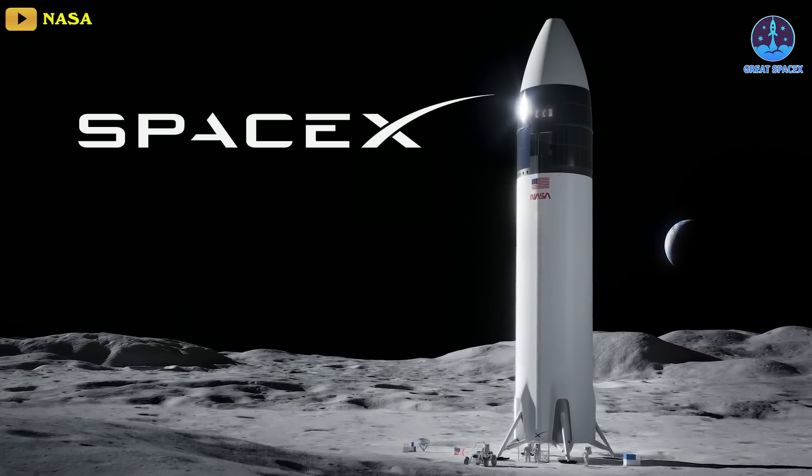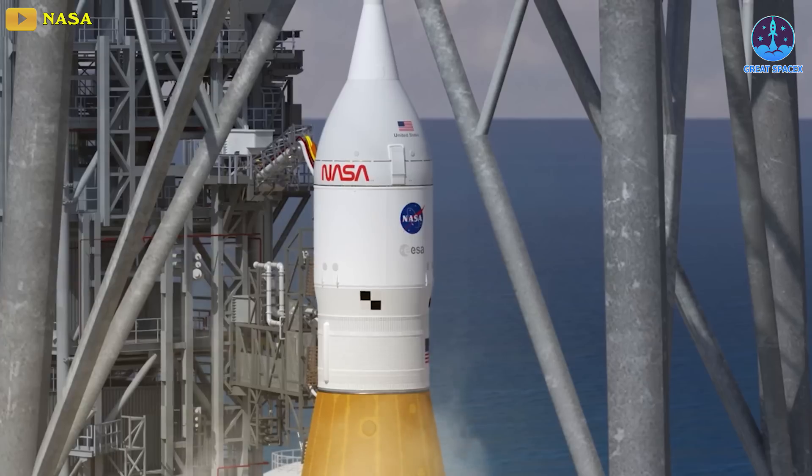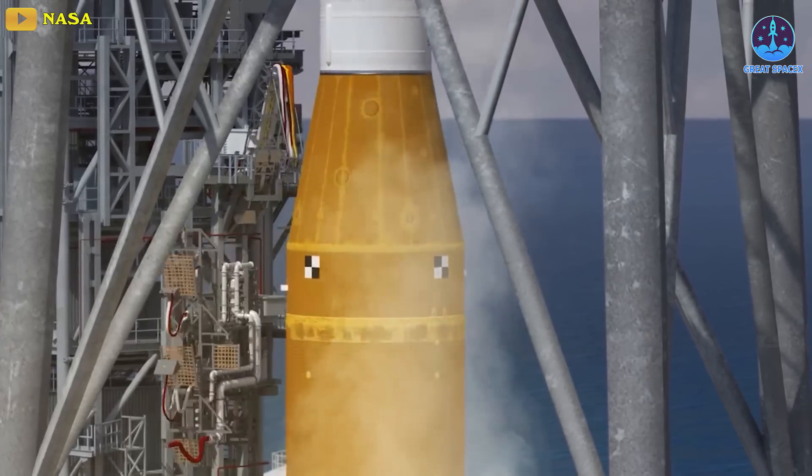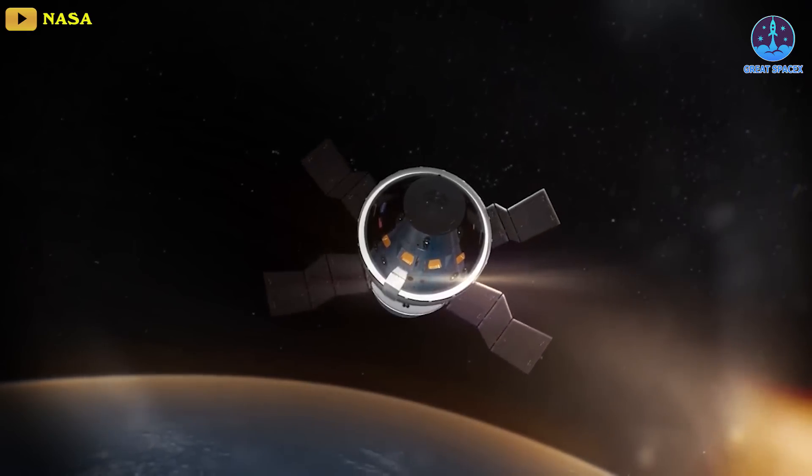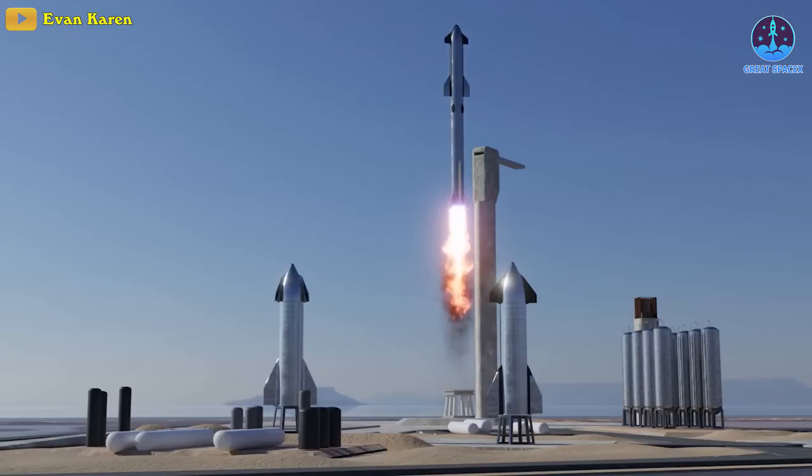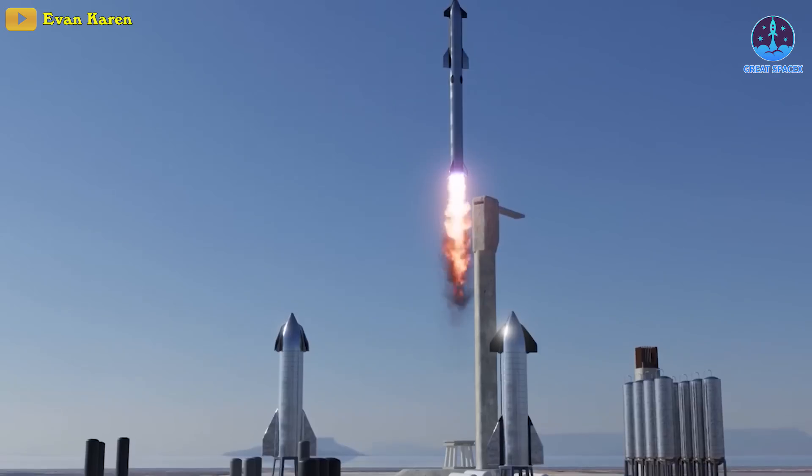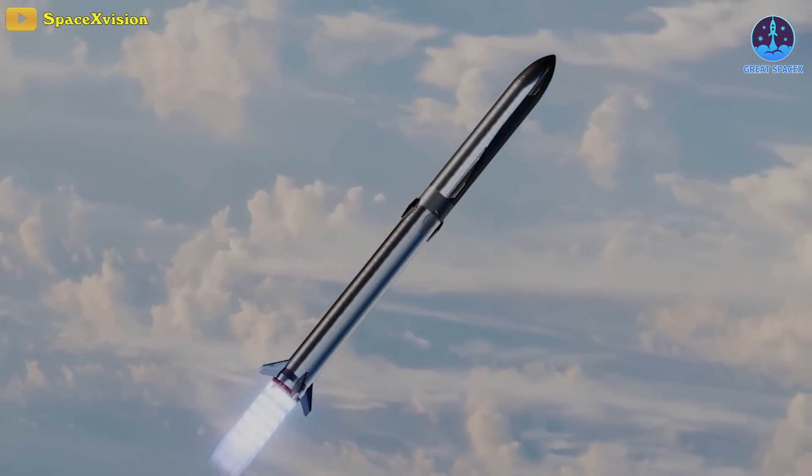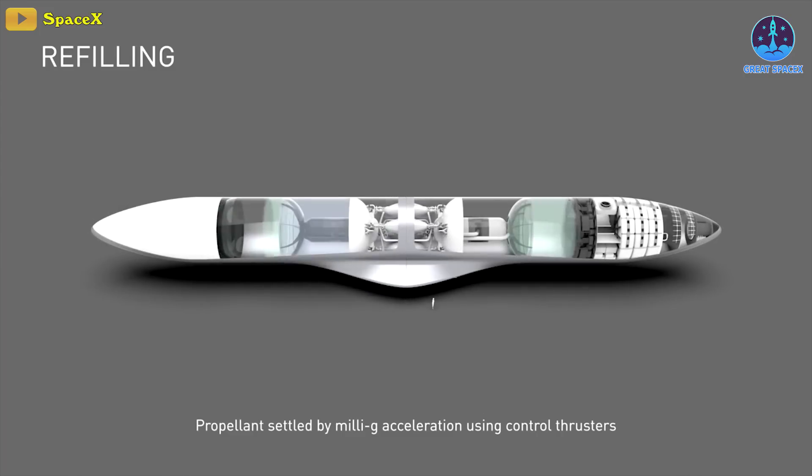It outlines that, as part of Artemis III, astronauts will take to the skies from Earth and SLS on board the Orion spacecraft. However, before this happens, Starship will first launch its propellant depot to orbit, followed by tanker starships to fill the depot.